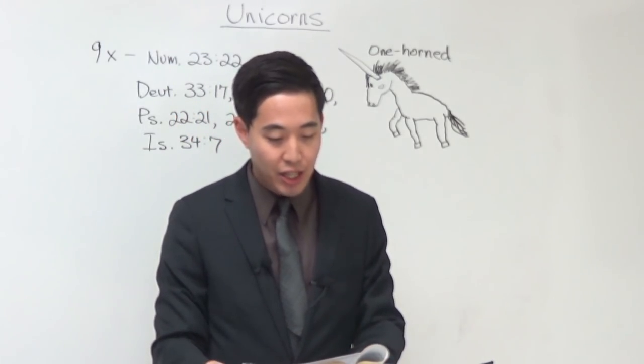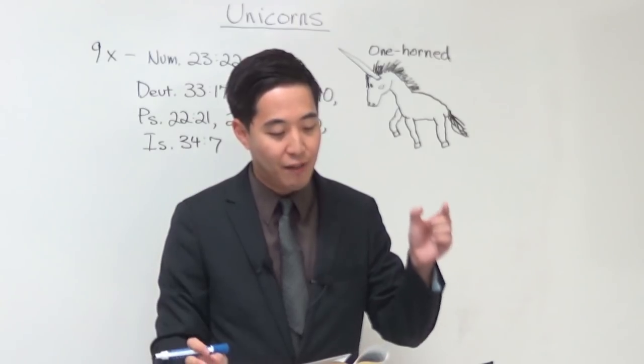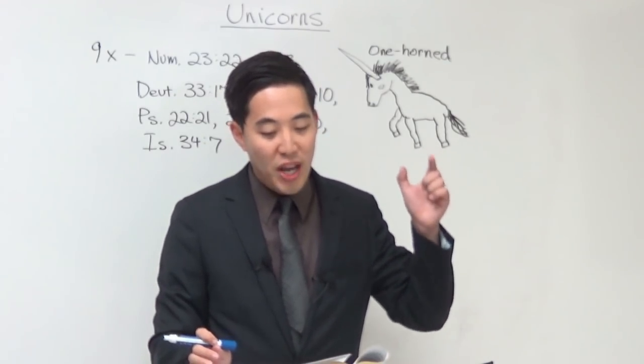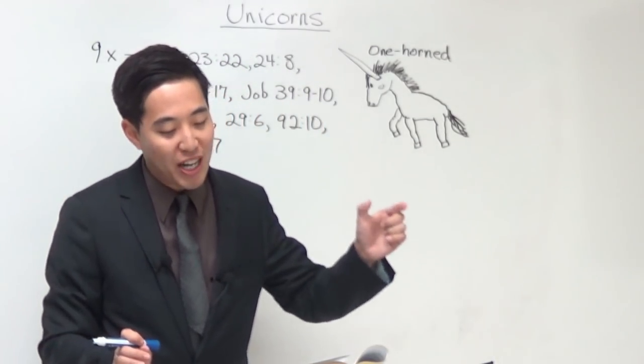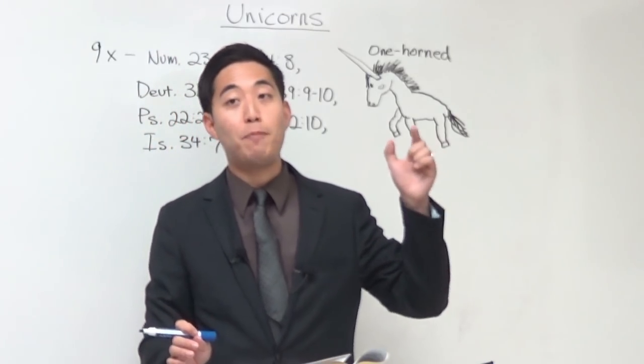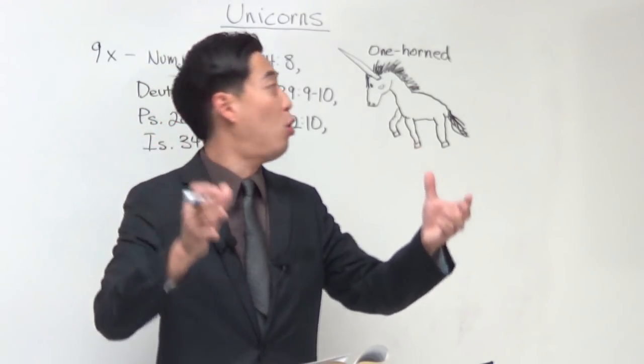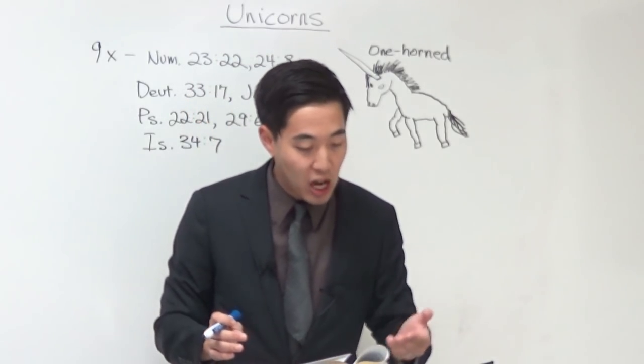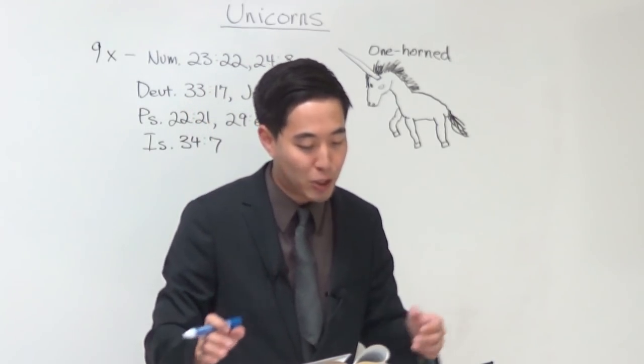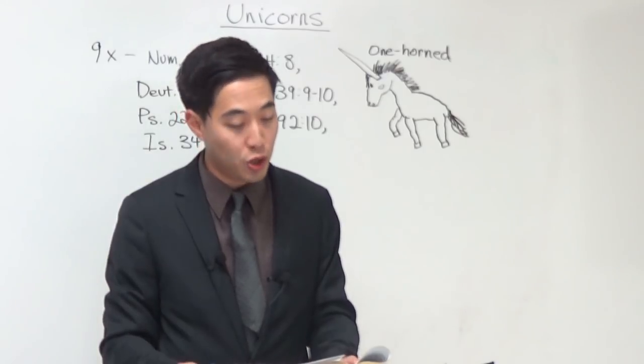Another thing is, if you look at Psalms 29, verse 6, we can see that this is pretty similar to the unicorn depicted in actual myths about the white horse with the one horn. Because in Psalms 29, verse 6, notice it skips like a calf, this unicorn.